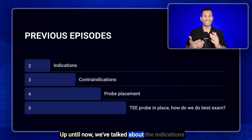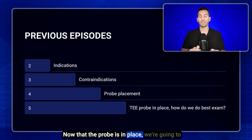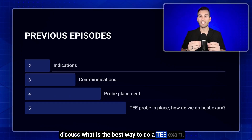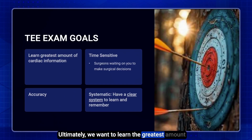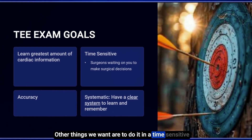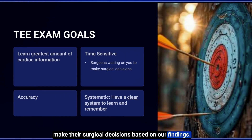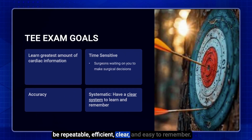Up until now, we've talked about the indications for TEE, the contraindications, and last episode was all about probe placement and troubleshooting. Now that the probe is in place, we're going to discuss the best way to do a TEE exam. Ultimately, we want to learn the greatest amount of cardiac information about our patient, do it in a time-sensitive manner, be accurate, and have a very clear system that is repeatable, efficient, and easy to remember.